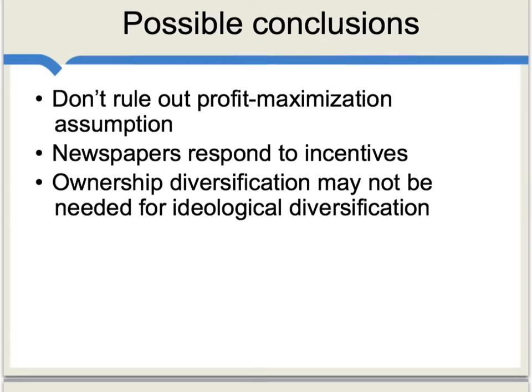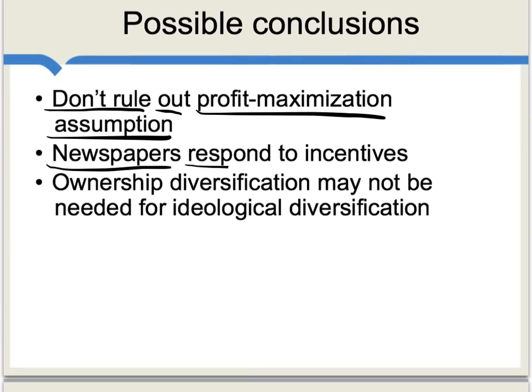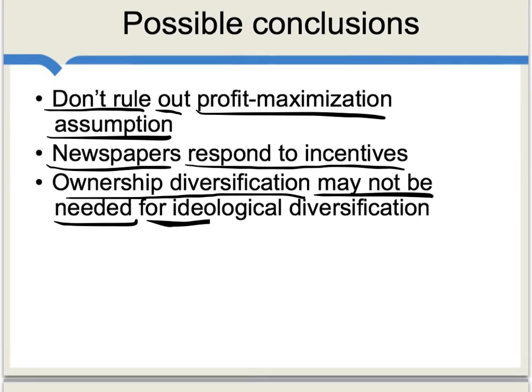Some possible conclusions from this paper. First, don't rule out the assumption of profit maximization for newspapers — if you do see some political slant, it may well be coming from the readers and not from the owners. Second, and quite generally, newspapers respond to incentives, and you can think of this paper as providing some evidence for a relatively passive view of what newspapers are about. They're businesses; they're trying to earn money. Finally, the authors briefly mention another possibility: ownership diversification may not actually be needed for ideological diversification of the news. Ownership diversification is often a regulatory issue, but if any possible slant of the news is mostly driven by what readers want, then who owns the newspapers or how many owners there are may not actually be that important.